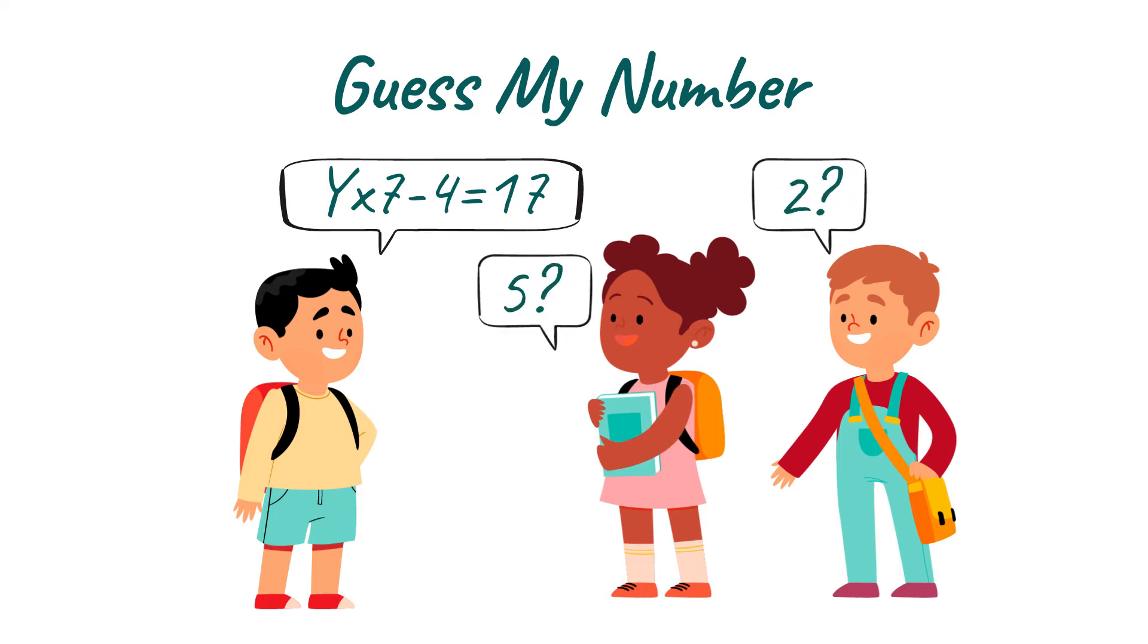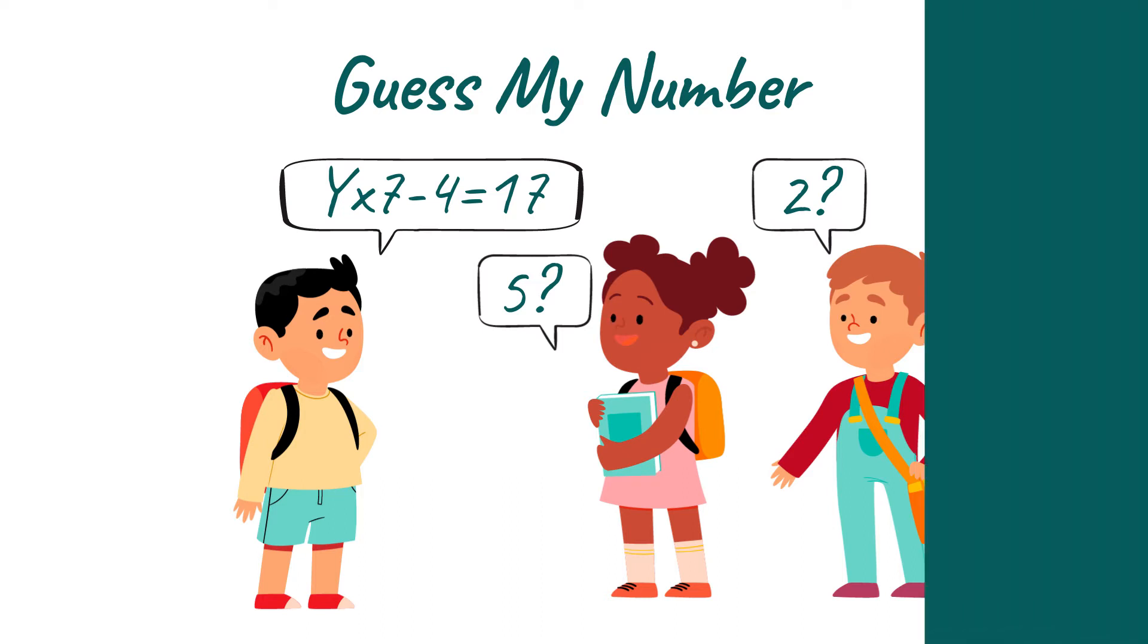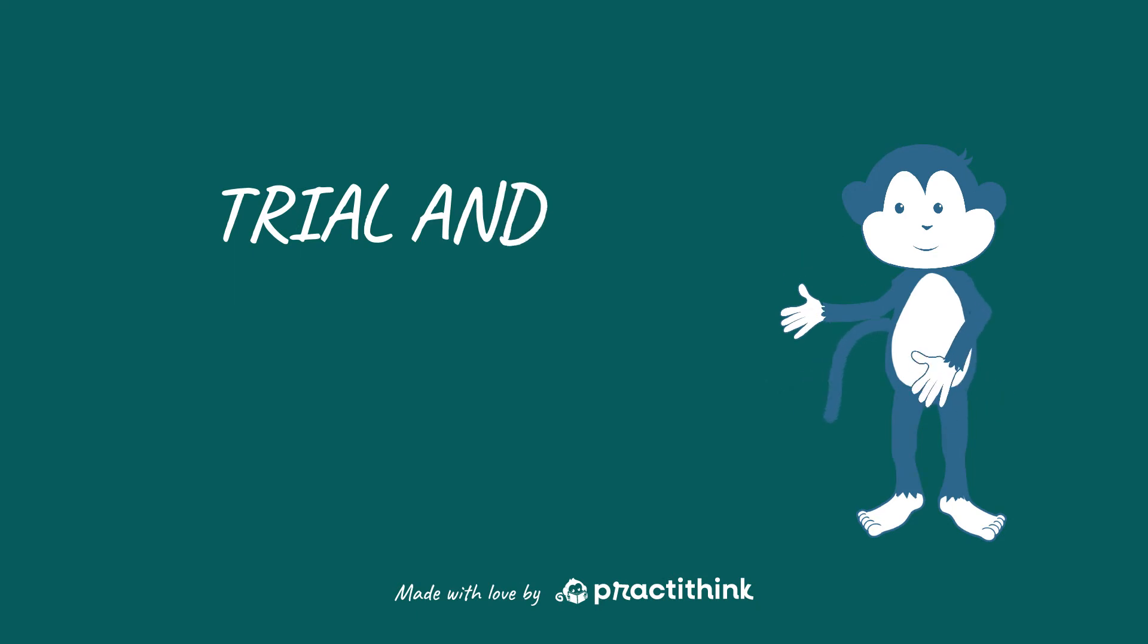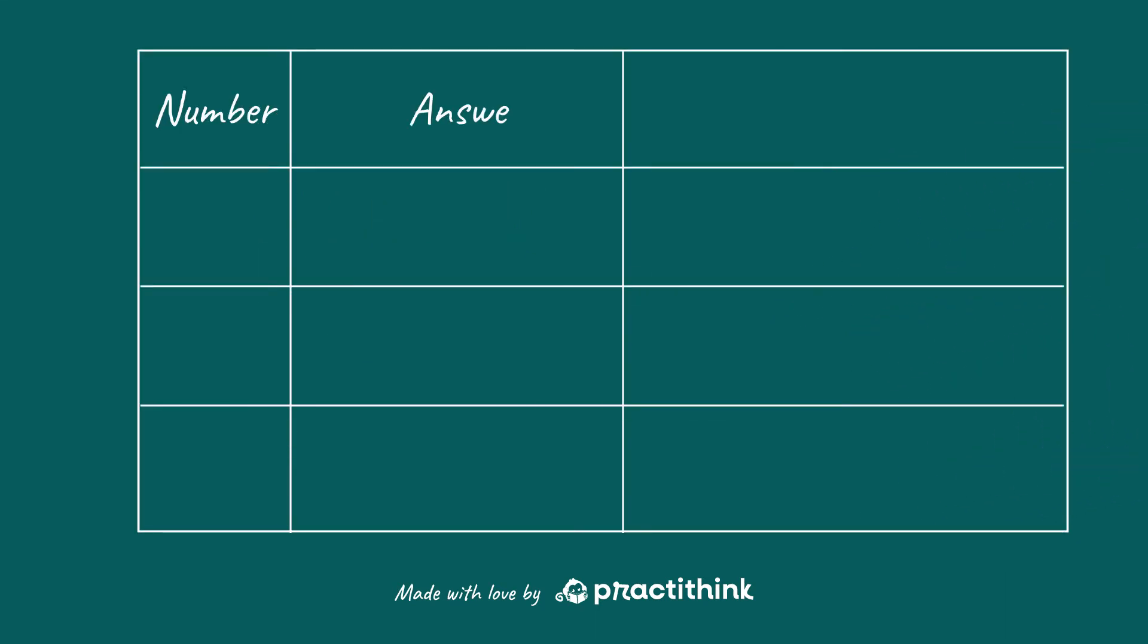5? Maybe 2? Let's see. There are a lot of ways we could find the answer. Let's look at one of these ways, called trial and improvement. This is a quick way to solve the problem. What you need to do is work backwards. Yes, backwards. Let's do it. We start with one possible answer. 5.